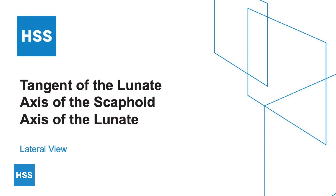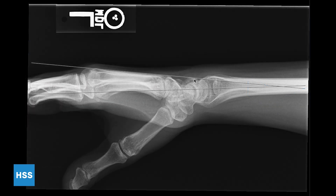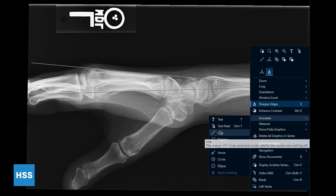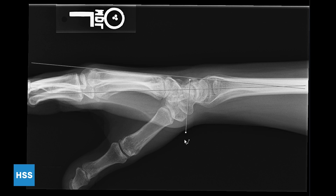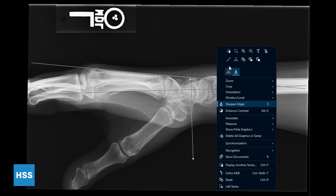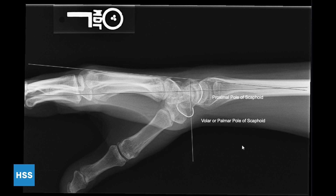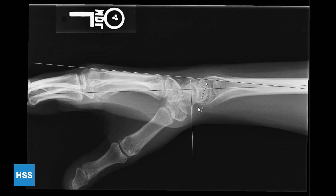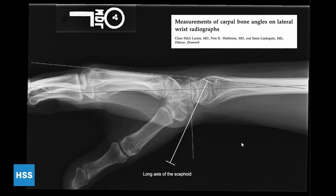Here we'll demonstrate how to draw the tangent of the lunate as well as the axes of the scaphoid and the lunate. You'll start by identifying the dorsal and volar poles of the lunate, as well as the volar and proximal pole of the scaphoid. Begin by using the annotate tool to draw a line connecting the dorsal and volar poles of the lunate and extending it in the volar direction, and then draw a line connecting the proximal and volar poles of the scaphoid. This tangential line forms the long axis of the scaphoid.